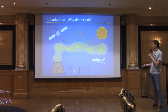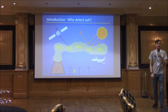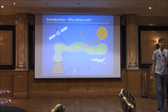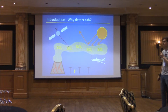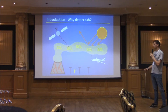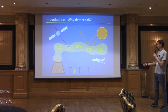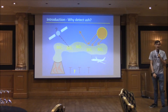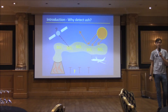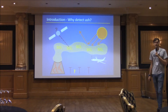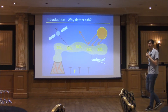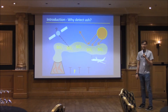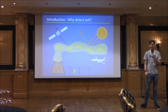The big one is plane travel. Everyone remembers the big Icelandic eruption in 2010 that effectively shut down Europe, and there were very big financial impacts because of that. We also have other infrastructure — ash settling on power lines can cause them to short out and generally damage them. There are also things like water systems and transport that volcanic ash can really impact.